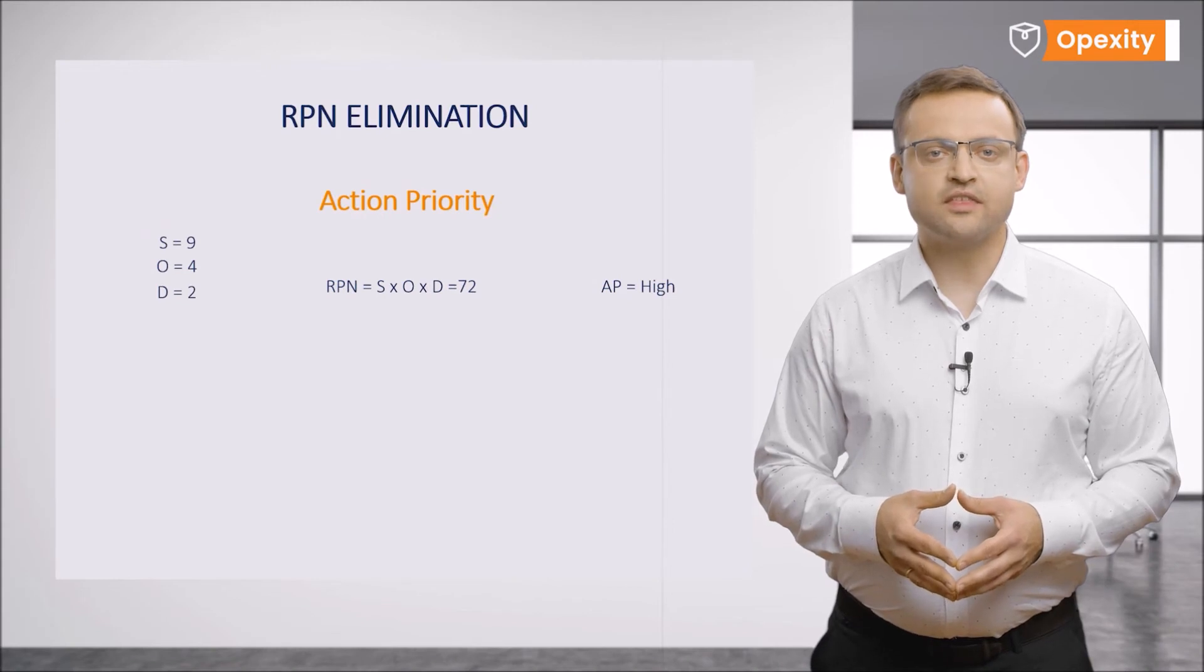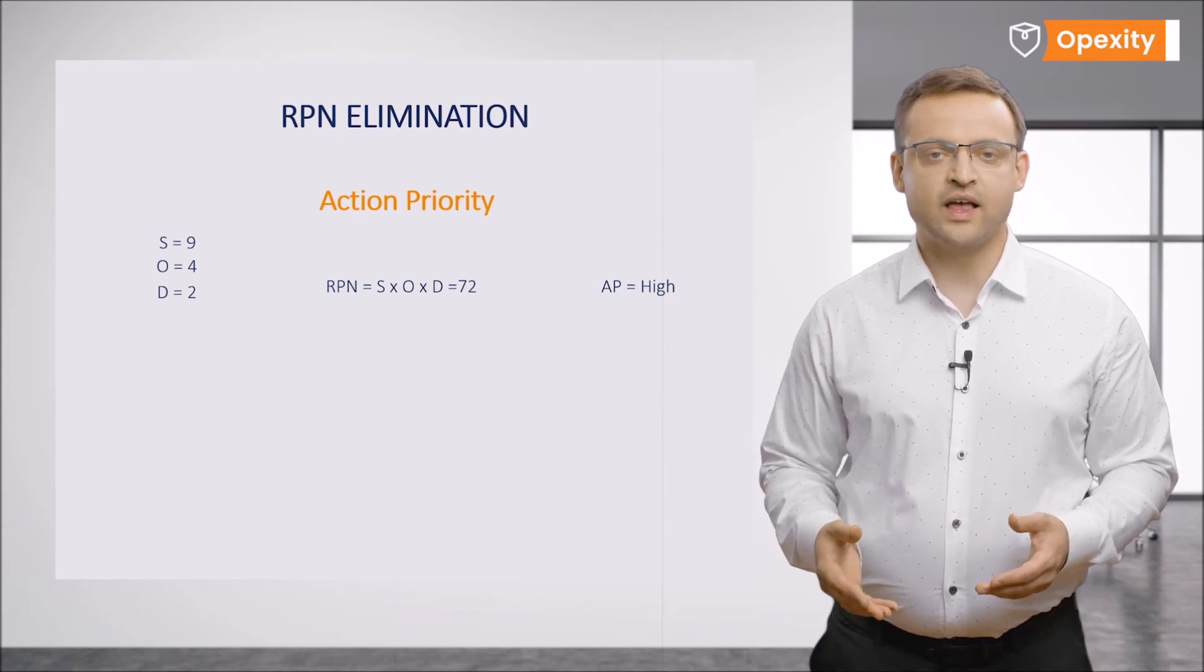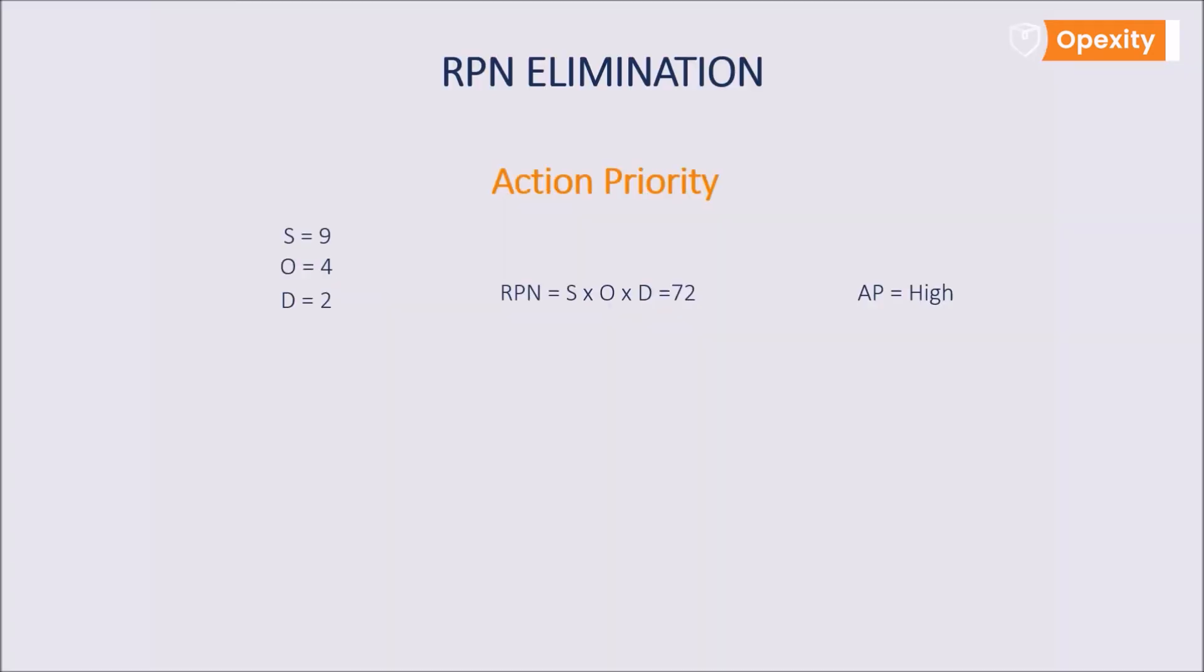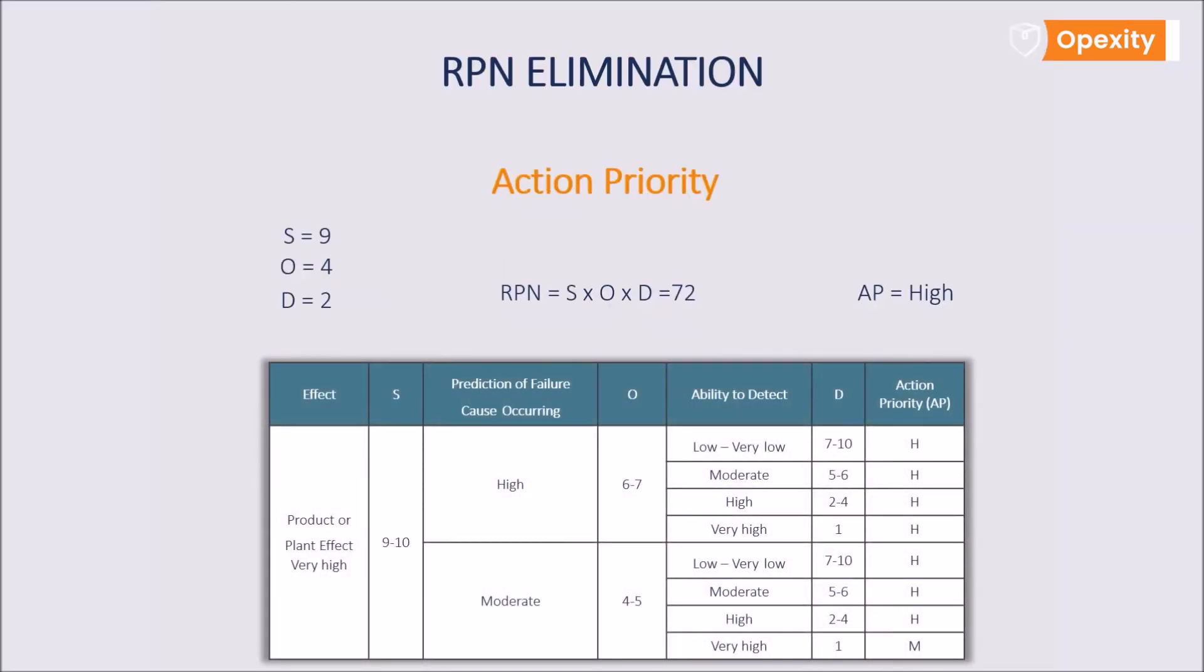The new approach, together with the action priority matrix for S, O, and D values, will oblige us to implement relevant action. According to the AP, the action priority will be high. How do we know that? Look at the part of the table that is provided by the handbook in order to prioritize actions in a correct manner.